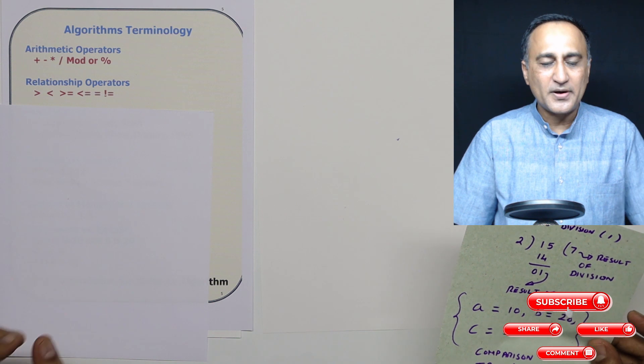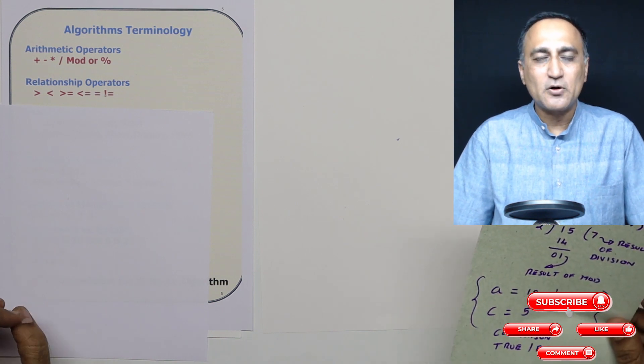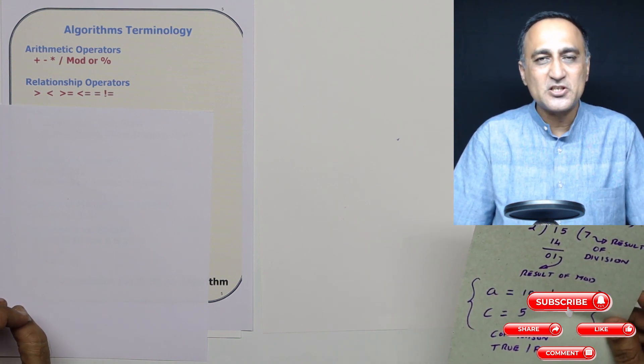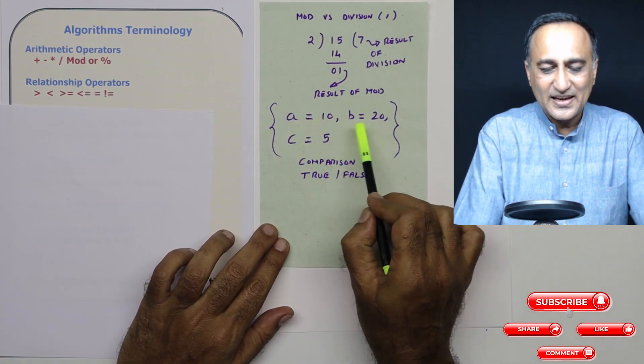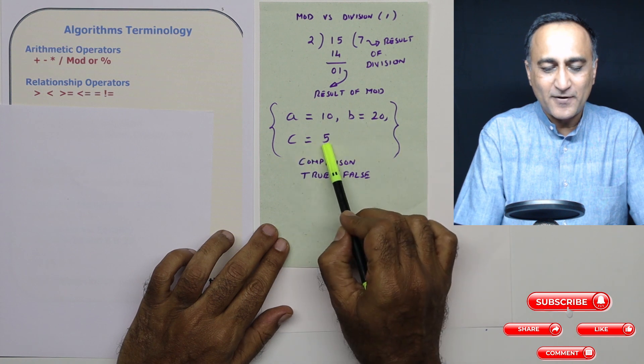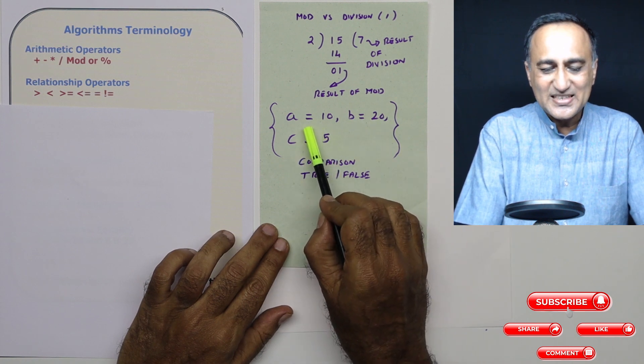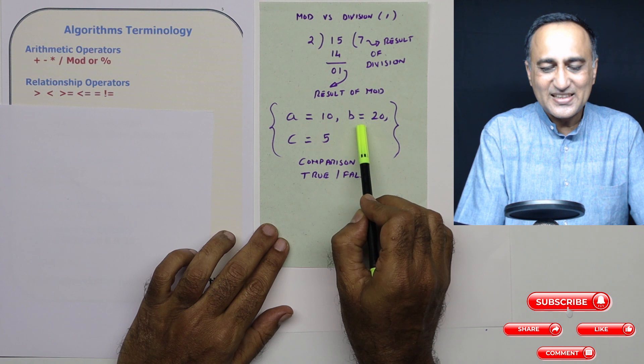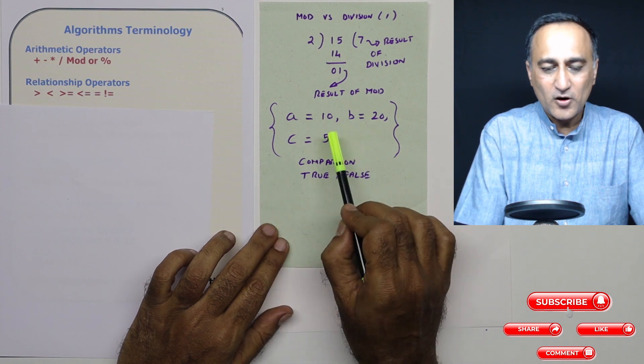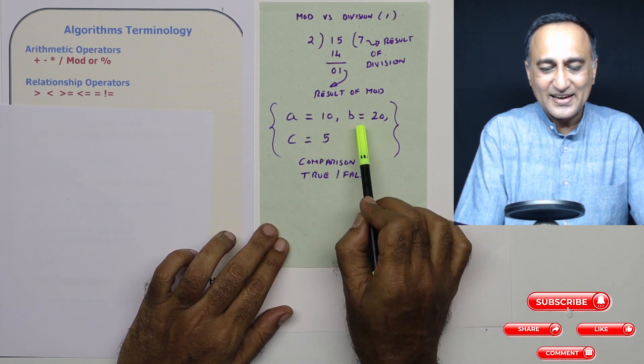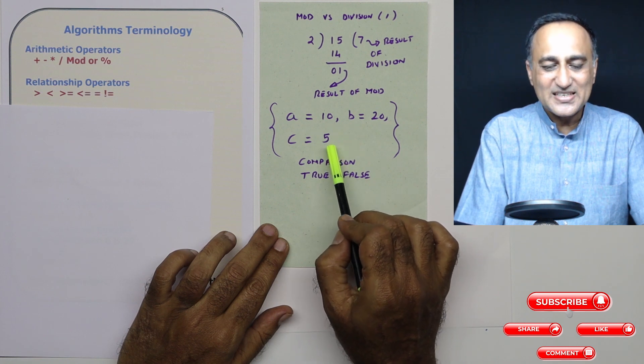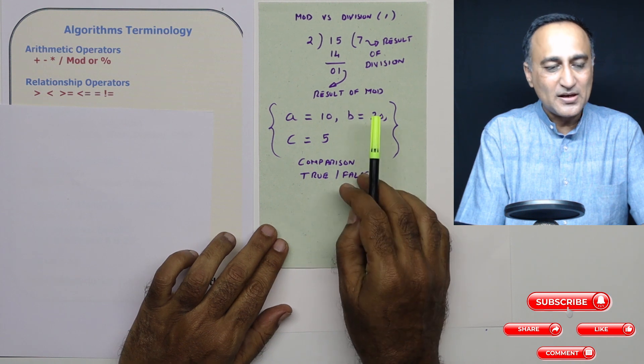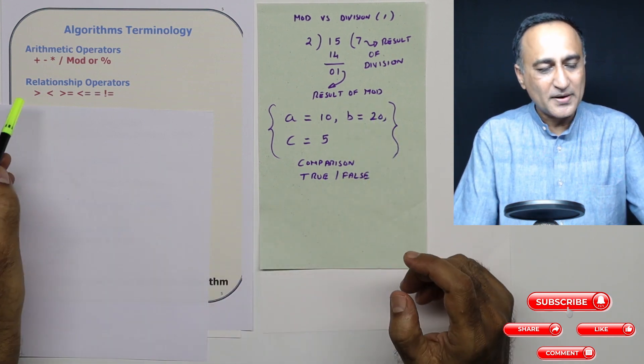Along with arithmetic operators, you will also be using comparison or relationship operators. For example, if a is 10, b is 20, and c is 5, I can check: is a less than b, or is a greater than or equal to c, or is c less than or equal to b. So these are all different operators.